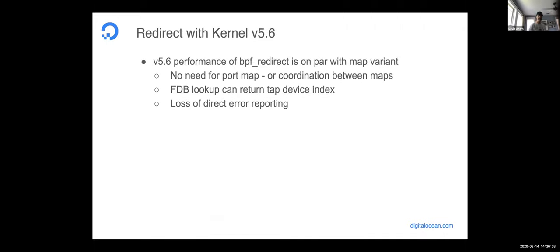In 5.6, some more work done by Toke got rid of the need for the map altogether. Now you can just use BPF redirect directly, no map variant needed — although there is a little bit of loss in error recording.